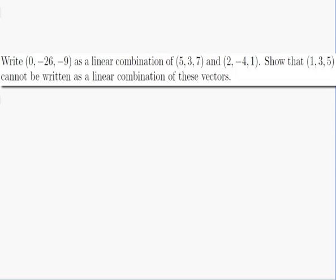I'm going to put my vectors as columns because usually when I'm doing stuff with vectors it is columns, and it's going to take a little less space. So I've got the vector (5, 3, 7) and I've got the vector (2, -4, 1). And I want a plus b of that would be coming out to (0, -26, -9). That's what it would look like if (0, -26, -9) was a linear combination.